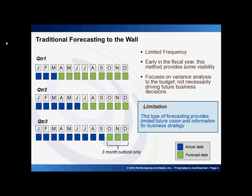A forecasting approach called forecasting to the wall is often used by organizations. With this approach, forecast months — shown here with green blocks — are forecasted to the end of the year. While this approach can be very useful in comparing the forecast to the budget, it is really not effective in providing a future vision. This is because late in the year, like for the third quarter forecast, the forward outlook is limited to only three months.